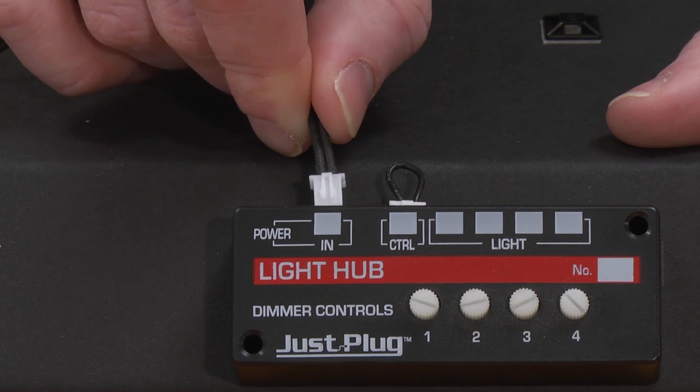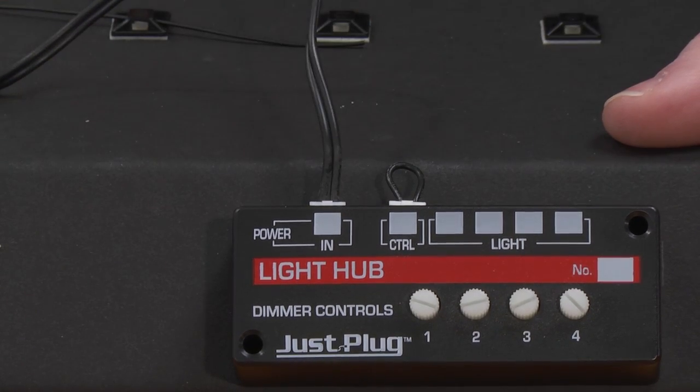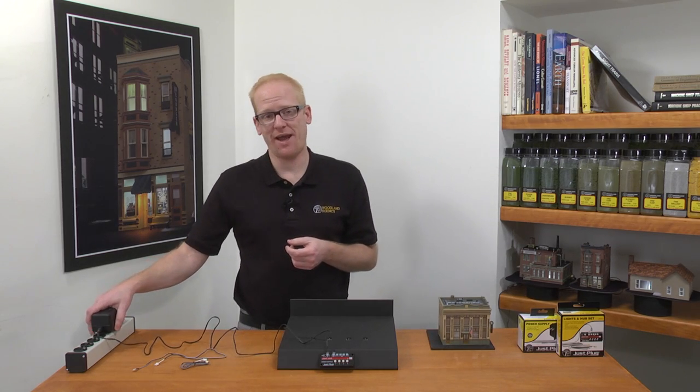First, connect the power to the light hub by inserting it into the power in port and then plugging the transformer into an outlet.